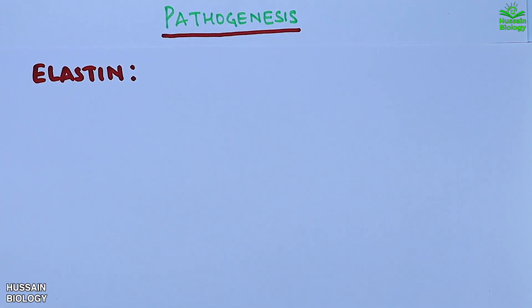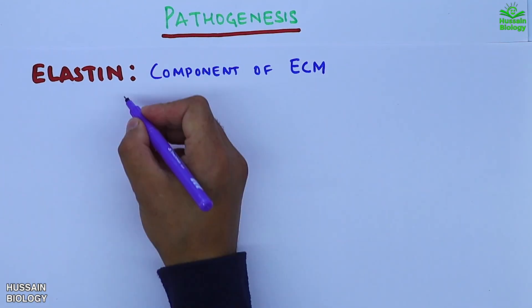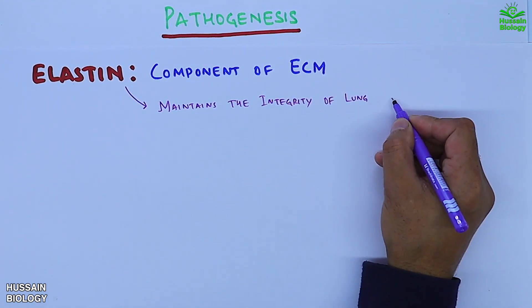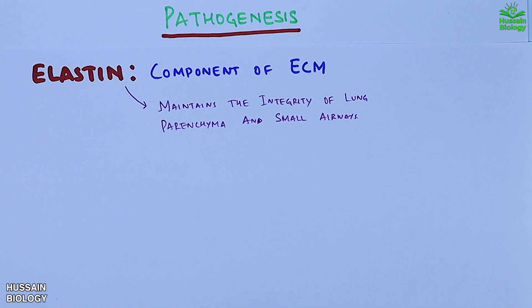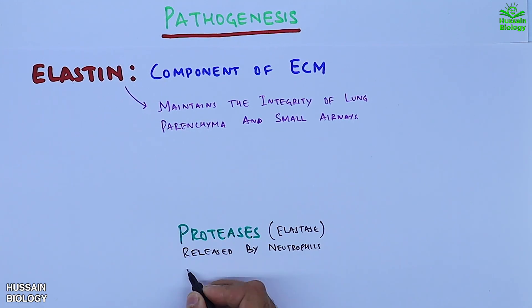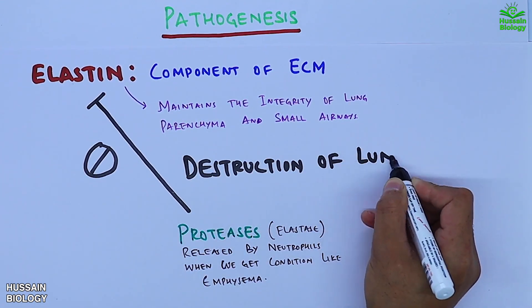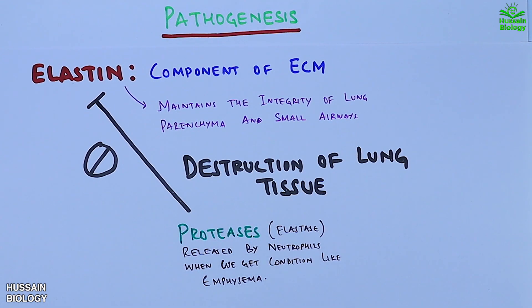Now let's move on to the pathogenesis of amphysema. We see we have the elastin protein in the lung tissue, which is an important component of ECM. It maintains the integrity of lung parenchyma and small airways. In case of amphysema, we get the release of proteases, which are basically elastases released by neutrophils. These proteases target the elastin and we get destruction of lung tissue.